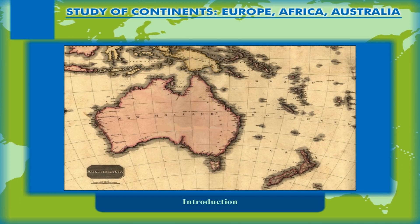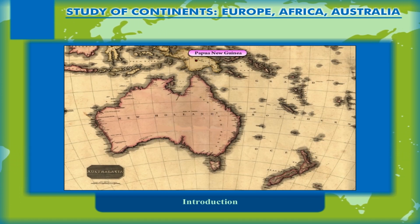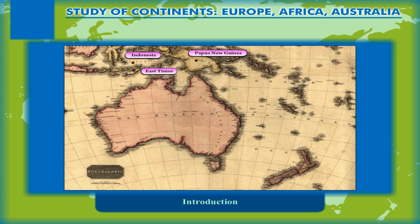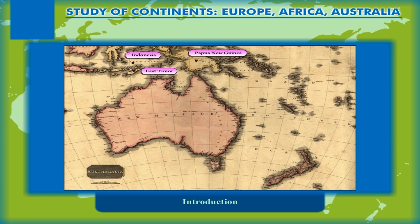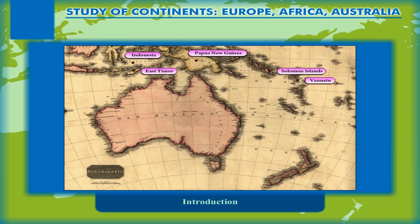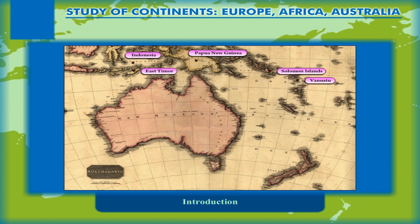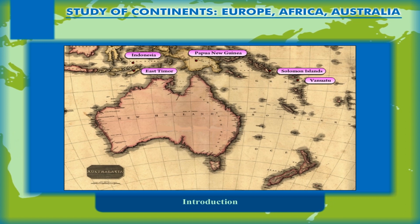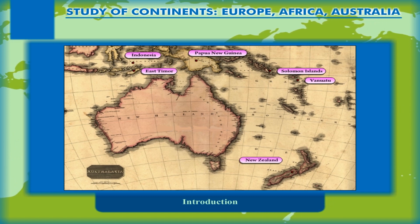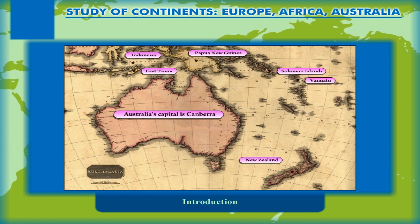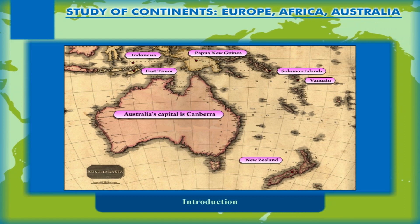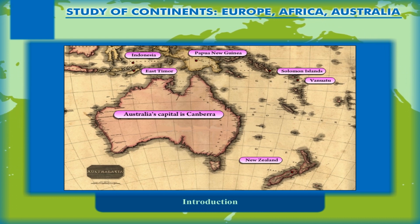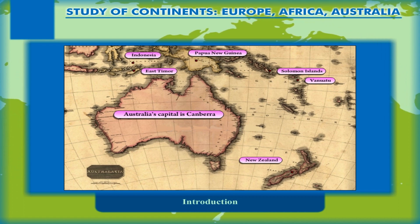The neighbouring countries are Papua New Guinea, Indonesia and East Timor to the north, the Solomon Islands and Vanuatu to the northeast, and New Zealand to the southeast. Australia's capital is Canberra, and its largest urban area is Sydney.